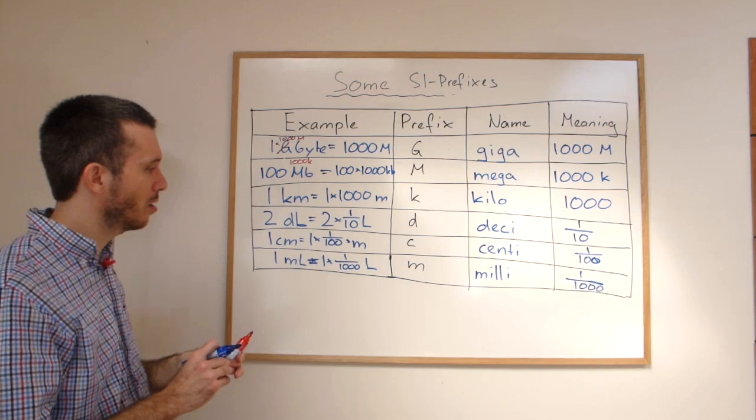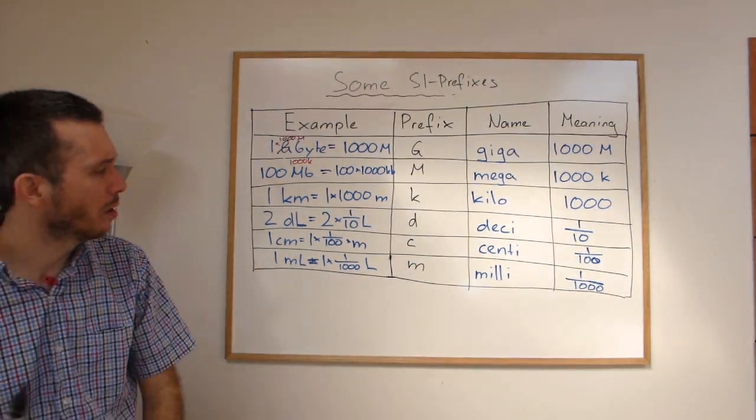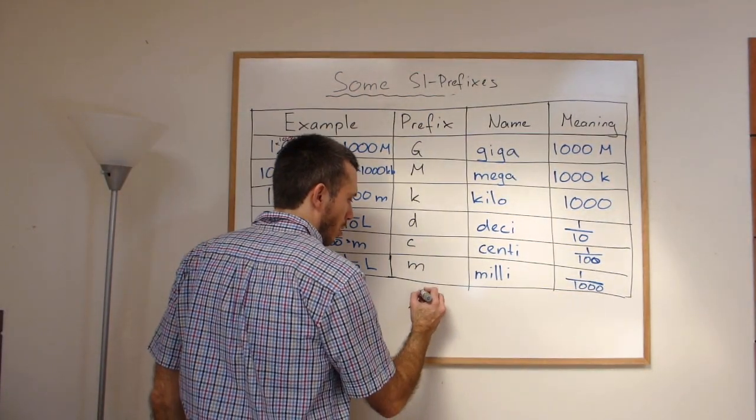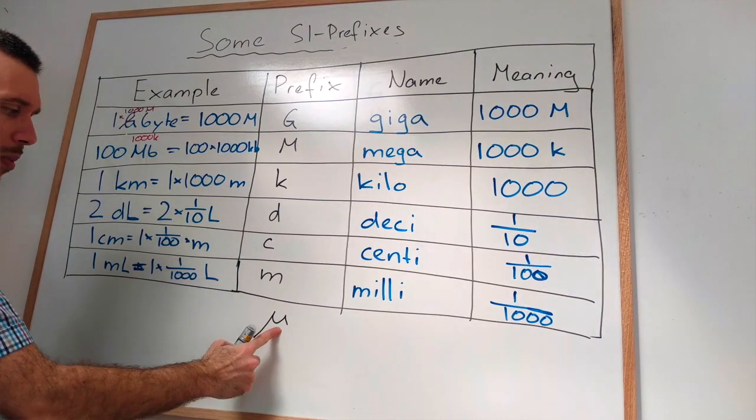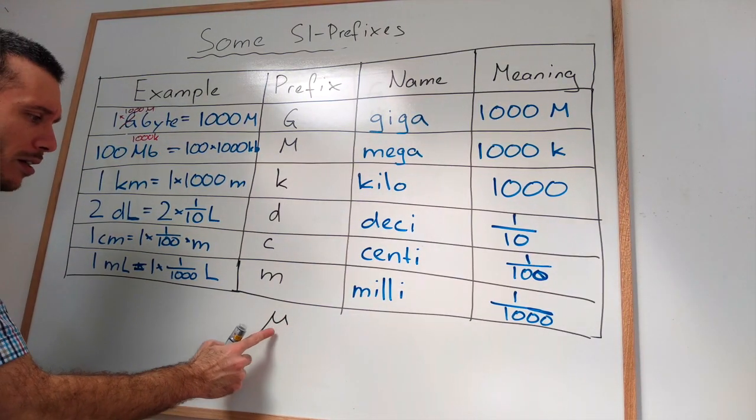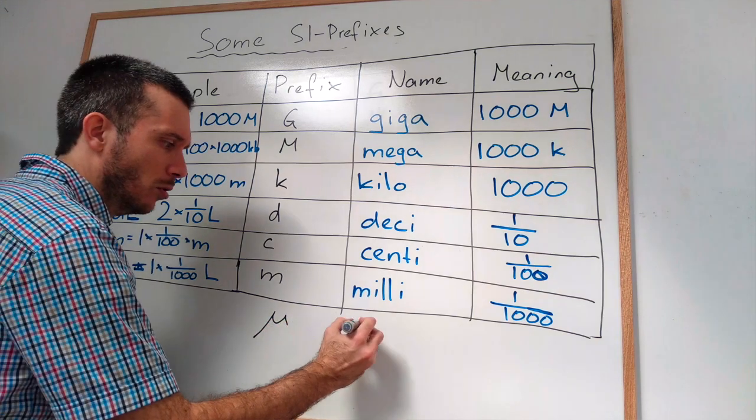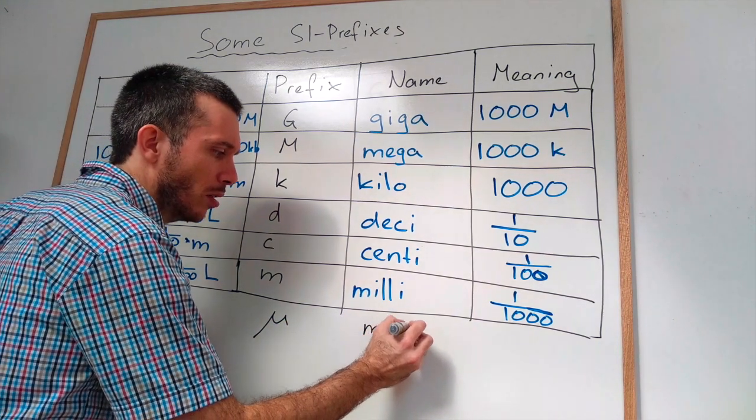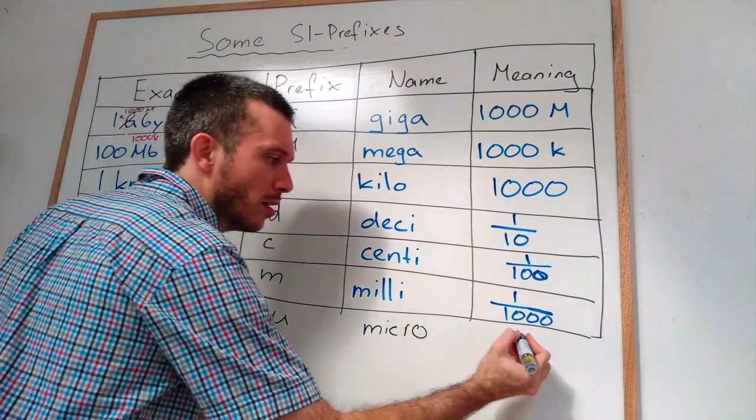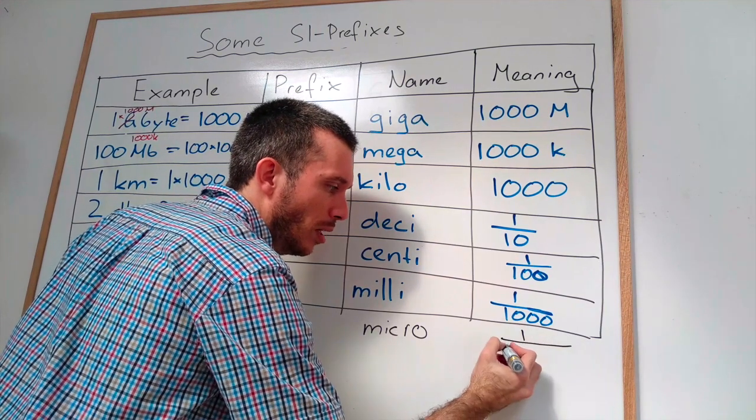There are even some Greek symbols that are used. But don't get too confused about it. For example, there is this little thing. It's called the micro. Like a big mu here. And then a little bit like a U, micro. And this is one over a million.